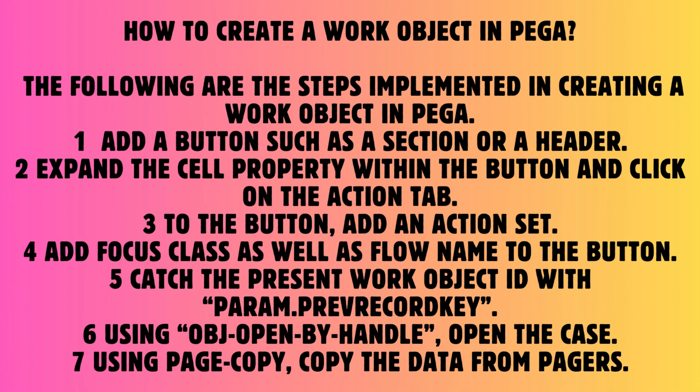Question: How to create a work object in Pega? Answer: The following are the steps: 1. Add a button such as a section or a header. 2. Expand the cell property within the button and click on the action tab. 3. Add an action set to the button. 4. Add focus class as well as flow name to the button. 5. Catch the present work object ID with pxPrevWorkOrderKey. 6. Using objOpenByHandle, open the case. 7. Using page copy, copy the data from pages.